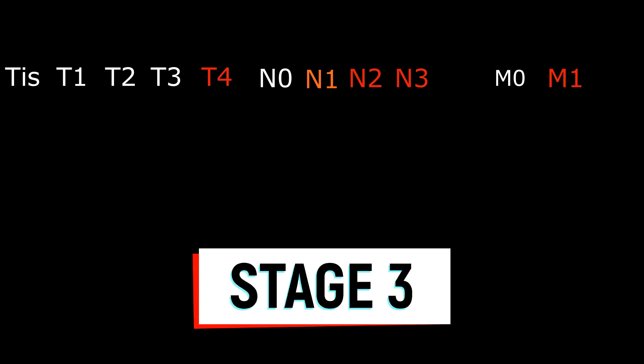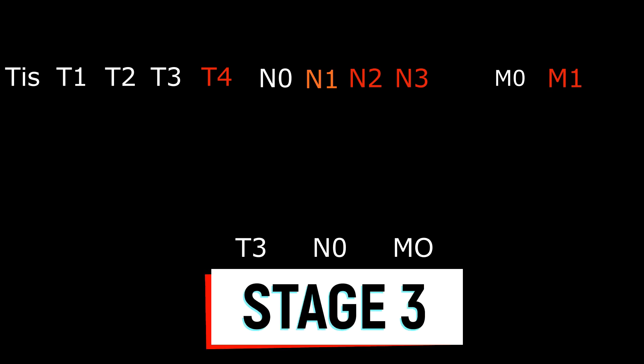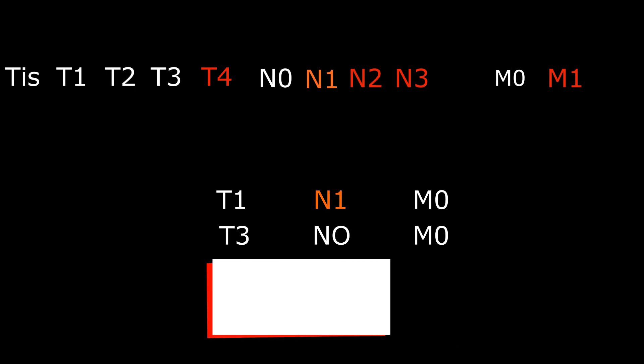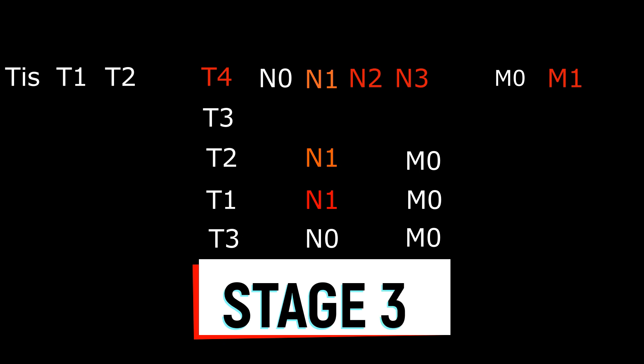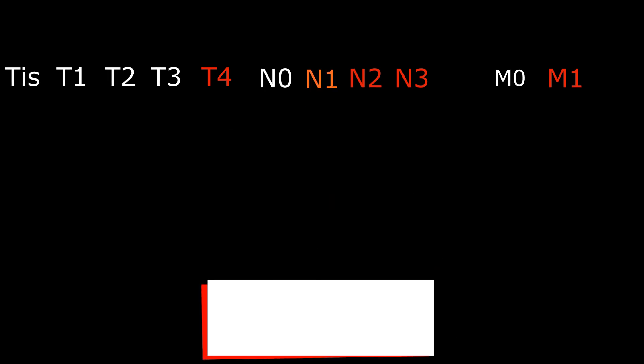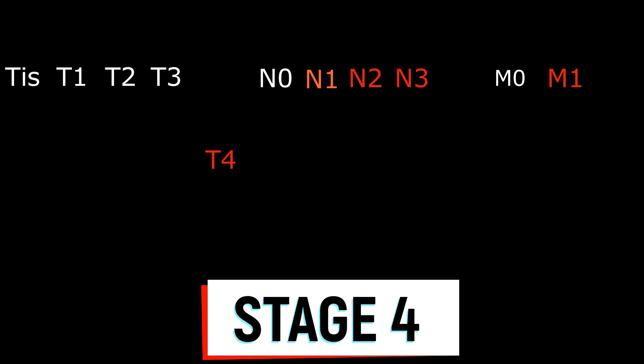Like always, T3 N0 and M0 will come for stage 3. Apart from that, unlike stage 1 and 2 where there was no lymph node metastasis, stage 3 covers metastasis to lymph nodes that come under the N1 category, which is when there is metastasis to a single ipsilateral lymph node 3 cm or less than 3 cm in diameter. This means that T1 N1 and M0, T2 N1 M0, and T3 N1 M0, all of these come under stage 3.